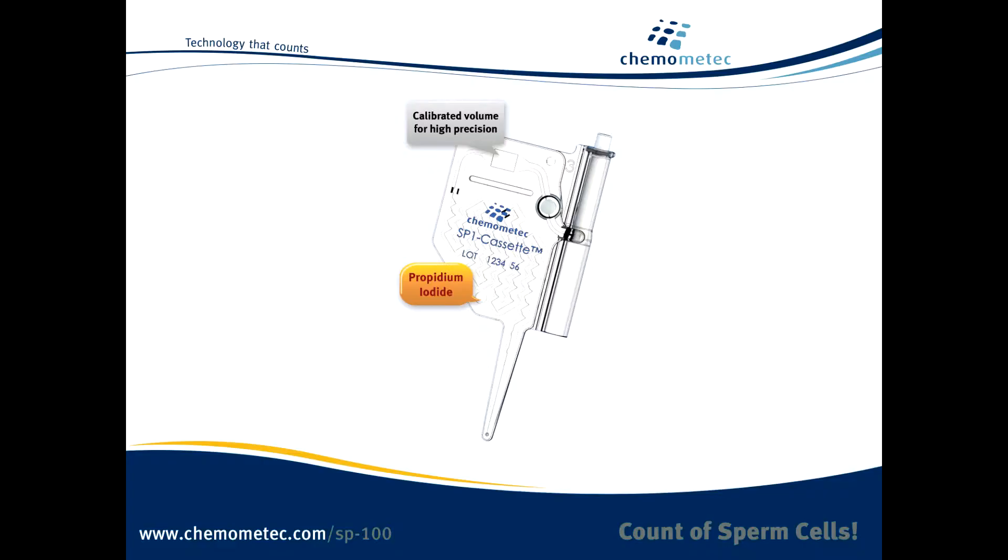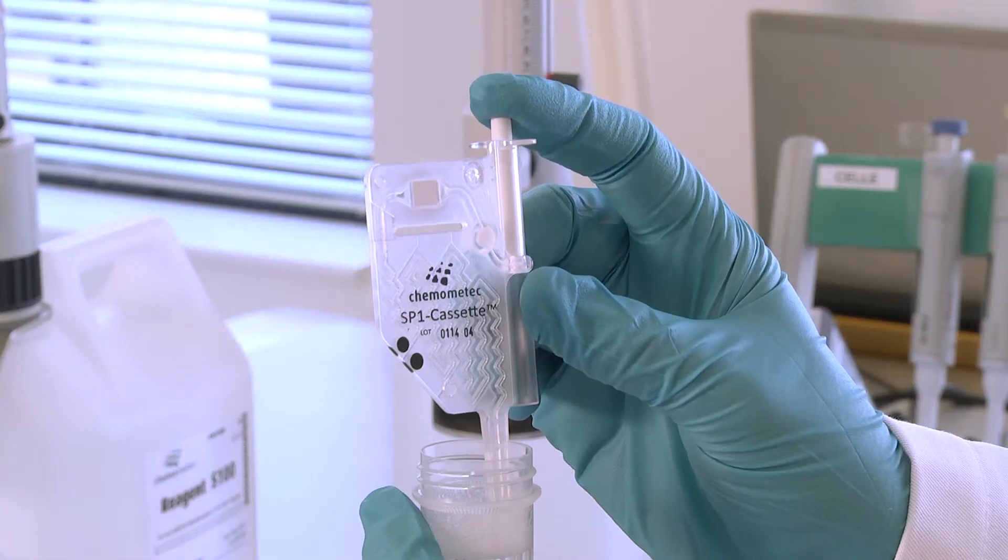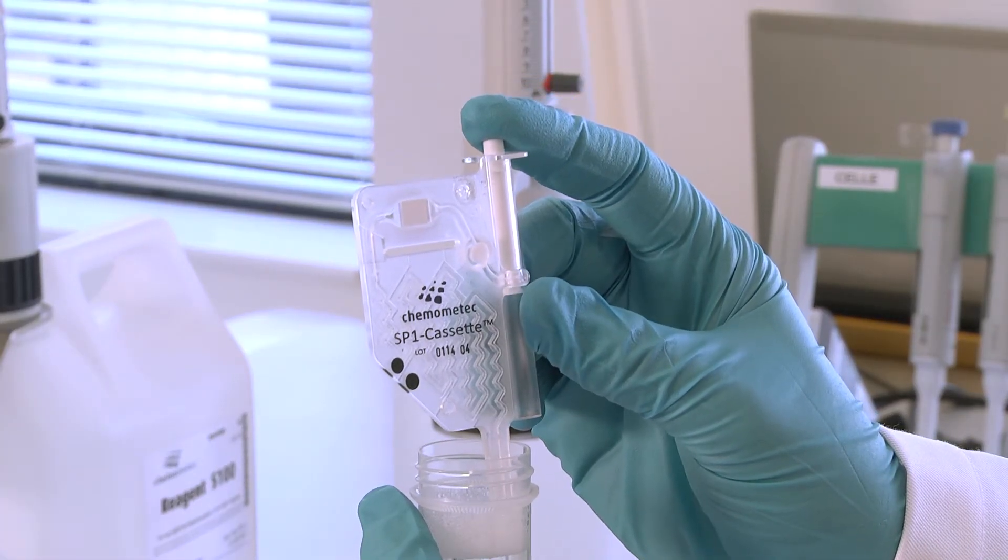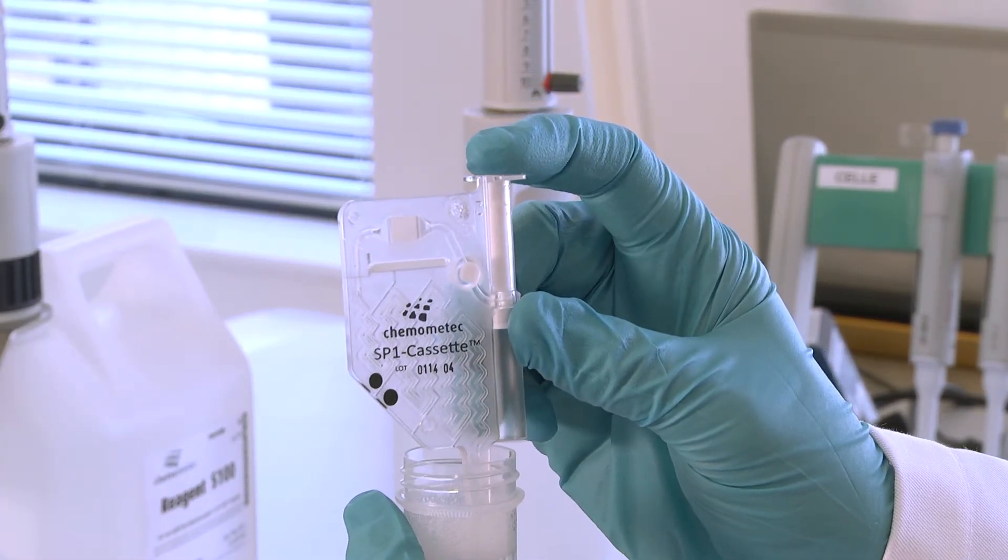The secret is the SP cassette. It contains the dye that stains the DNA of the sperm cells. The volume is pre-calibrated, eliminating human subjectivity and everything is self-contained so there's no exposure to hazardous materials.